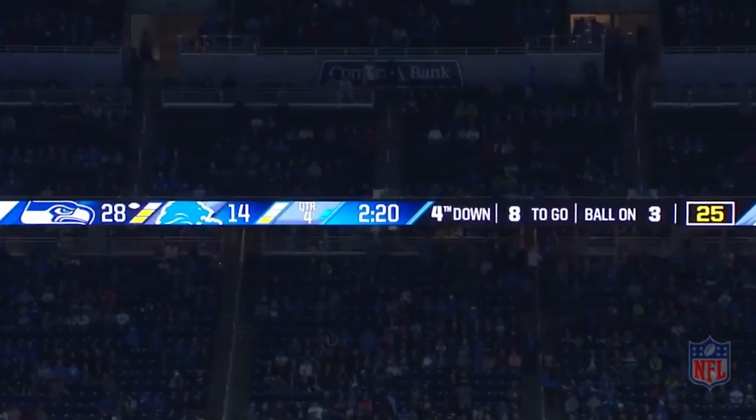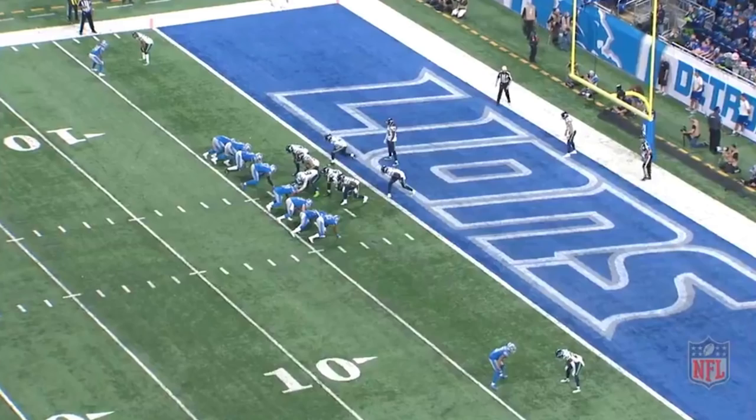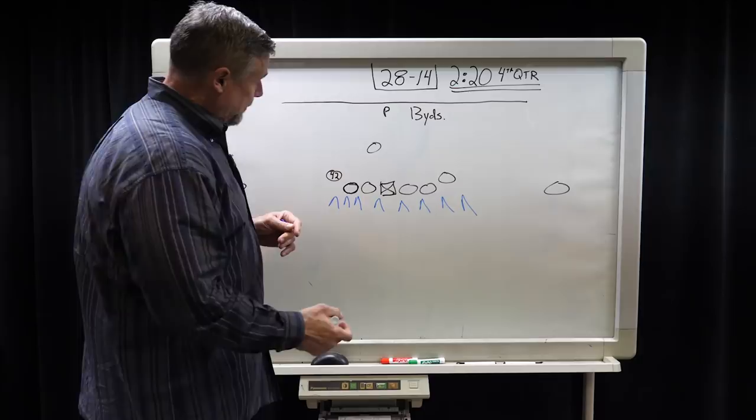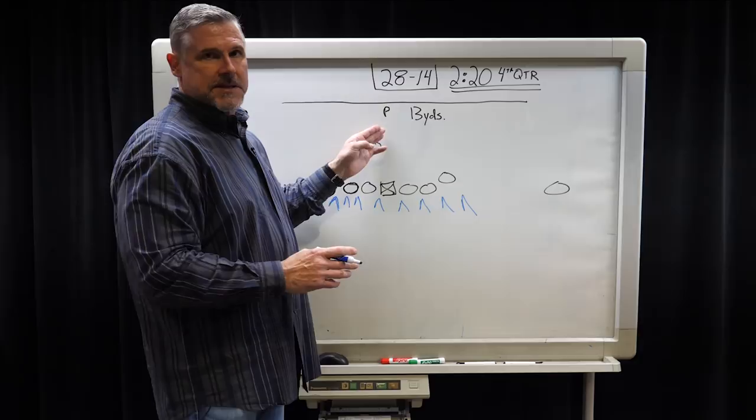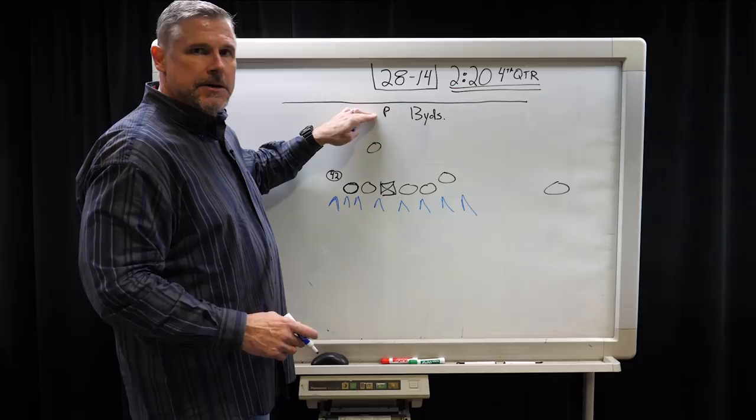A couple of things that happened during this play that I think gave Michael Dixon a chance to actually run it. And remember Deshaun Shedd, he was the outside rusher here. And first of all, the reason why this was maybe take a safety instead of punt it away is typically Michael Dixon lines up at about 16 yards, and he was only 13 yards.